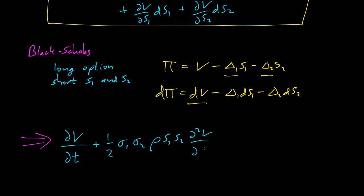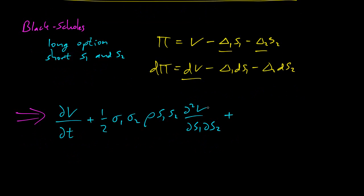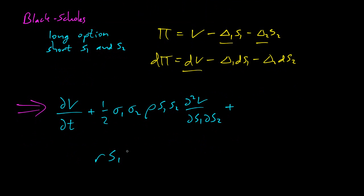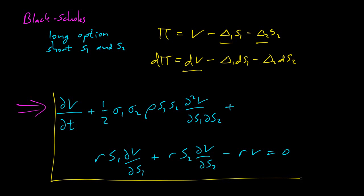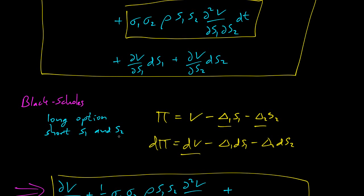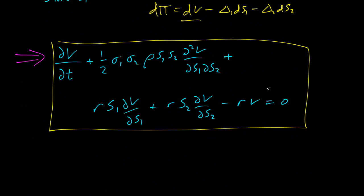Second, with respect to S1, partial S2 plus R S1 partial of V with respect to S1 plus R S2 with respect to S2 minus R V equals zero. I think that's right. That's right. So here is Black-Scholes for two assets. And I didn't do any dividends just to keep it simple. So we got that by doing the standard, long the option, short both underlyings, and we end up with Black-Scholes here. All right. So that's cool.